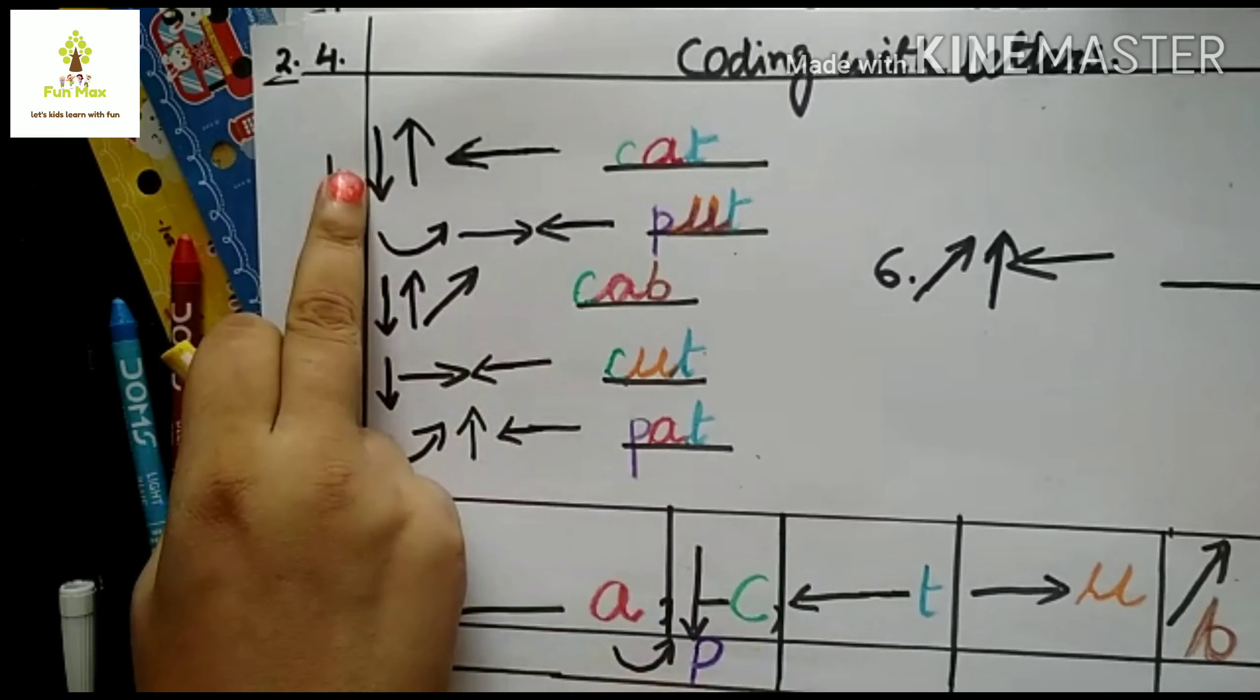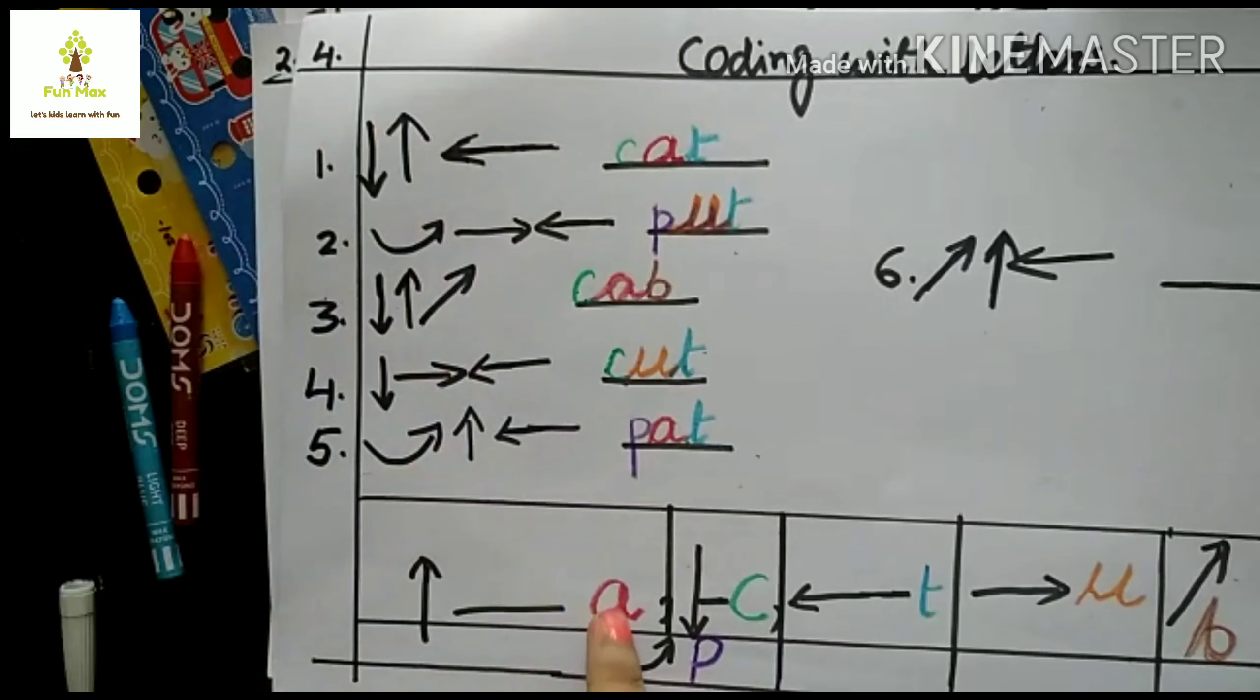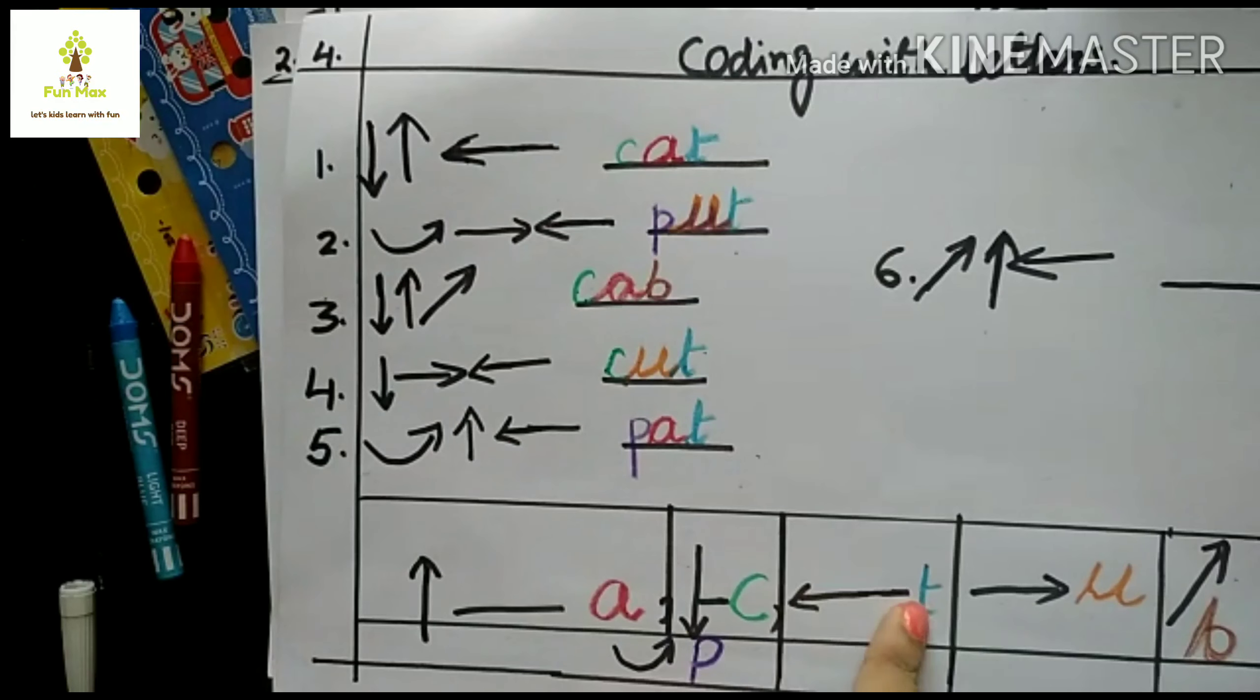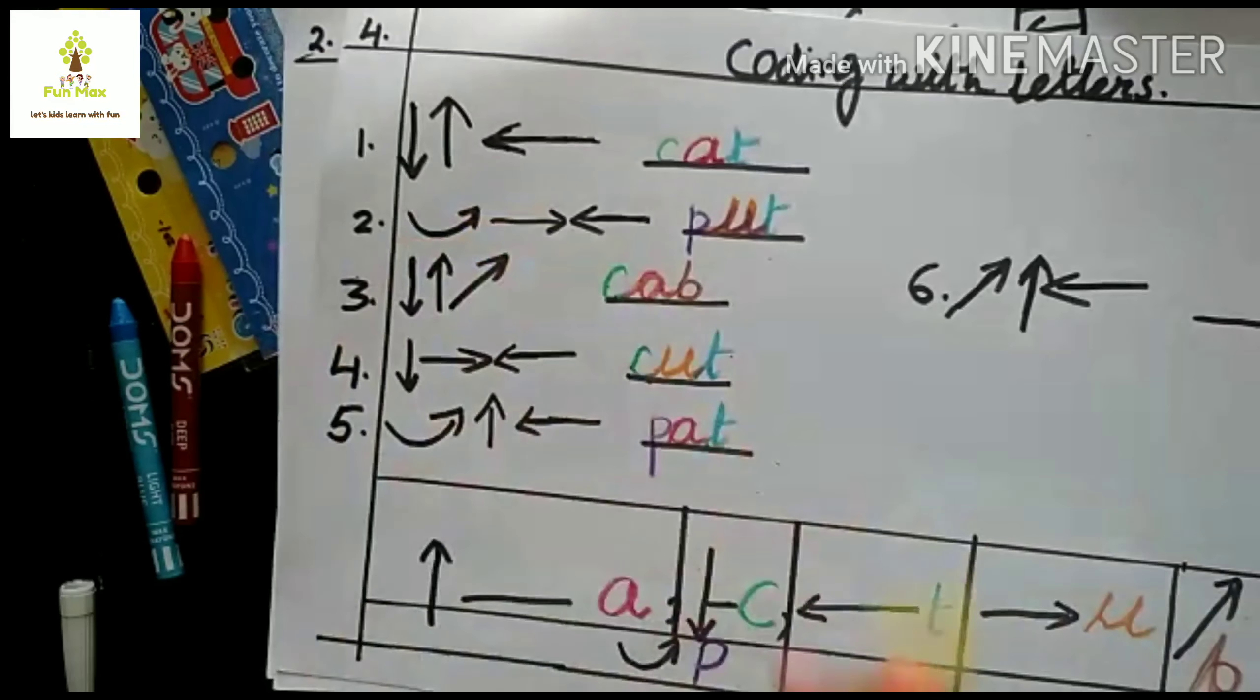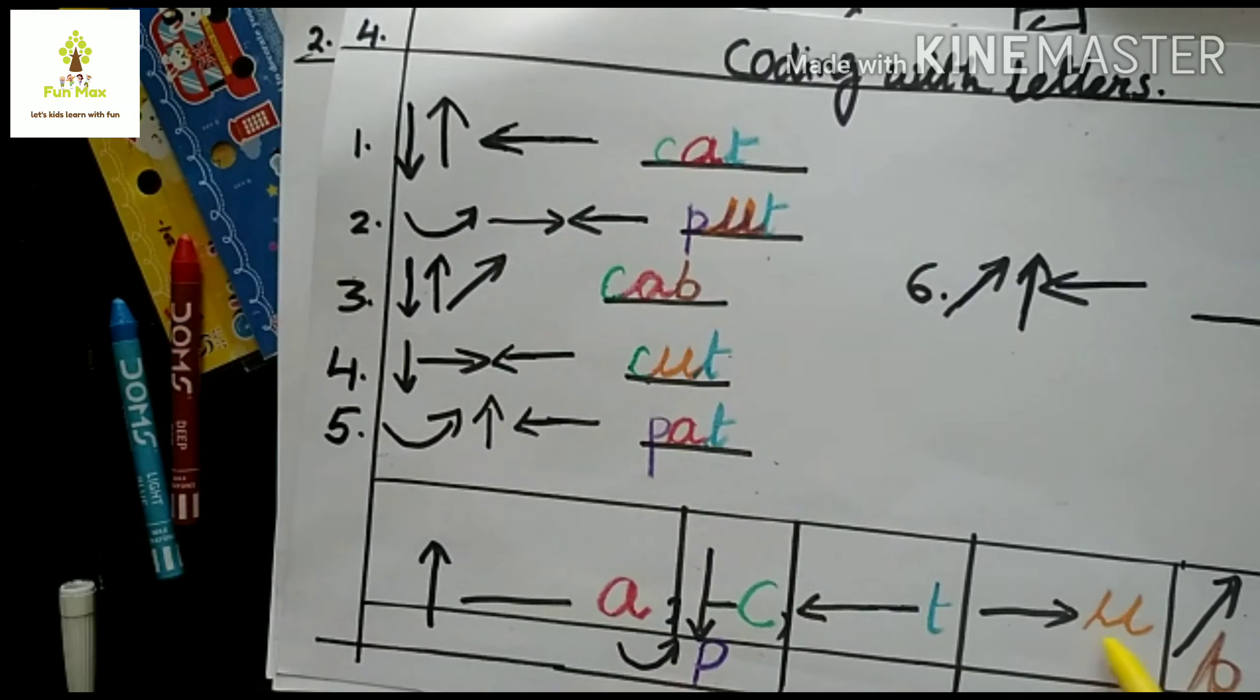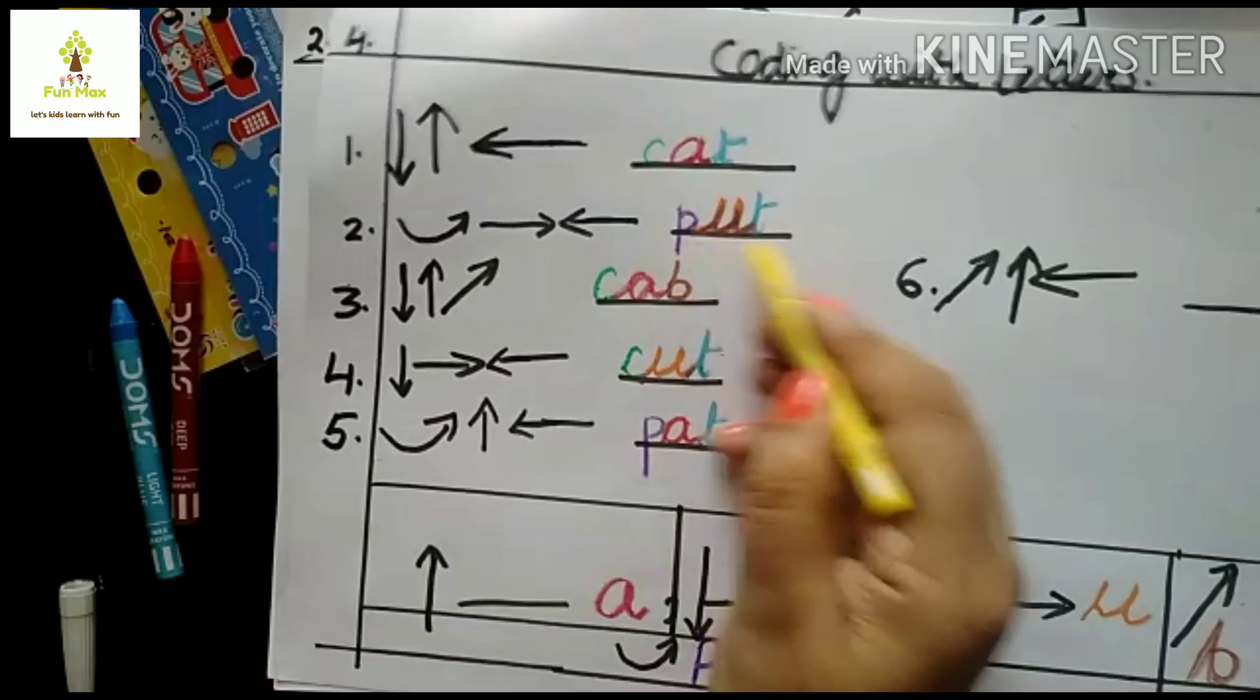Here, this is a down arrow, down arrow C. Up arrow A, and left arrow T. That means C, A, T, cat. In this way, the second one: U-turn P, purple color, right arrow U, and left arrow T. That is P, U, T, put.